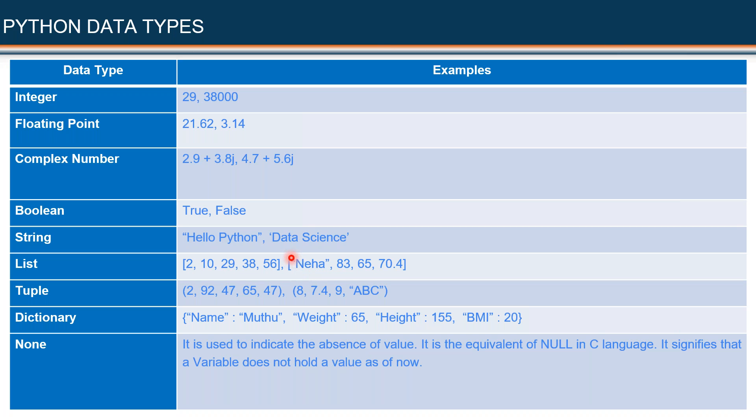The certain points to be remembered regarding list are this. Number one, it is a collection of values. Collection of four values or five values or 10 values or 20 values. Number two, the beginning of the list should be indicated by a square bracket and the end of the list should also be indicated by a square bracket.